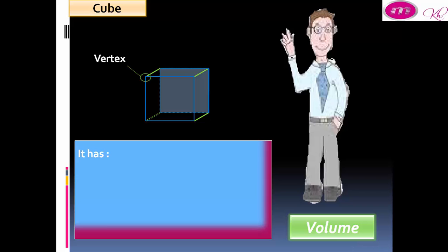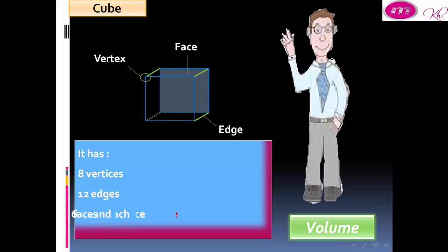The point between two lines is called a vertex, and a cube has eight vertices. The line in a solid is called an edge, and a cube has 12 edges. A cube has six faces, and each face is a square.